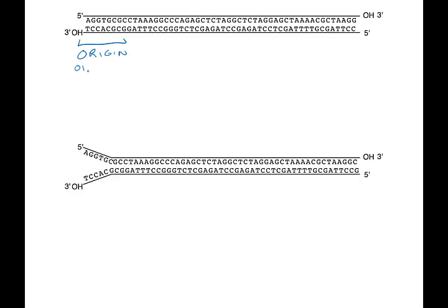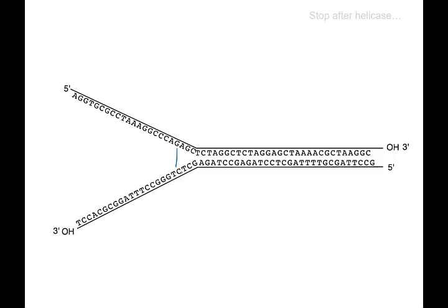All right, so here we have our diagram of a double-stranded DNA molecule. Replication starts here at an origin of replication where the DNA gets pulled apart, and that allows this helicase enzyme to get in there and start separating the strands. It works along with this topoisomerase enzyme that helps to relieve the tension that builds up as those strands get pulled apart.